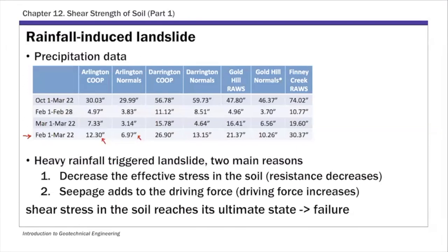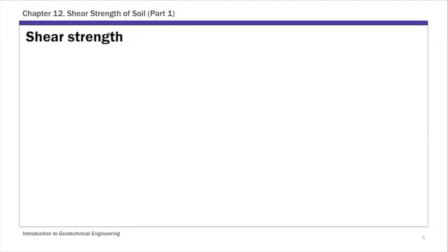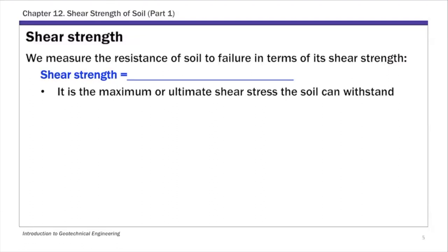That's why landslides typically happen after heavy rainfalls. When a slope fails, that's when the shear stress in the soil reaches its ultimate state — that's when the slope fails. This relates to what we're going to discuss in this chapter: shear strength. We measure the resistance of soil to failure in terms of its shear strength, because in most geotechnical engineering problems, soils fail because of excessive applied shear stress.